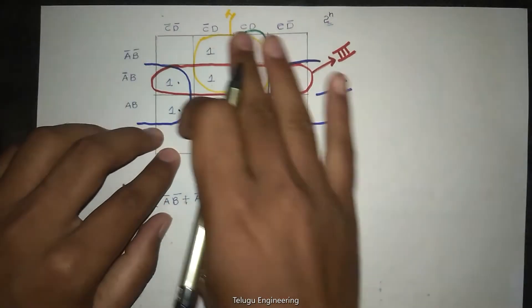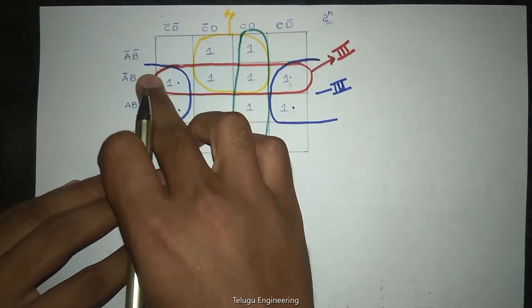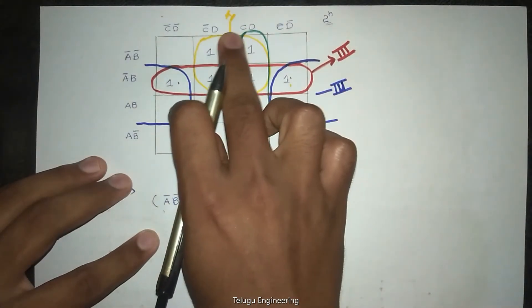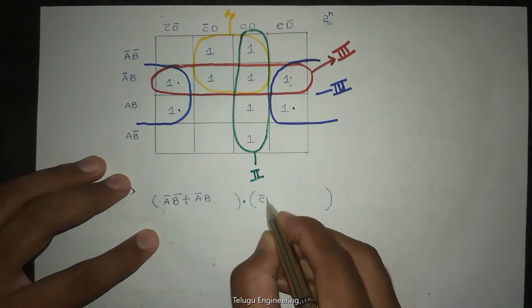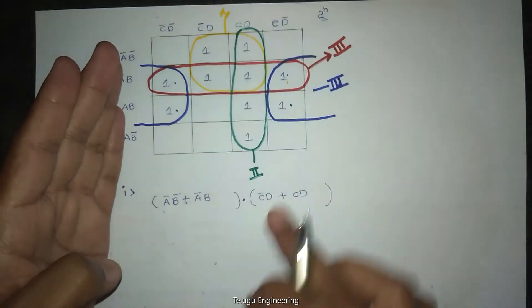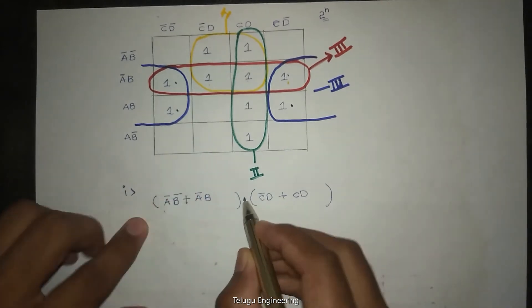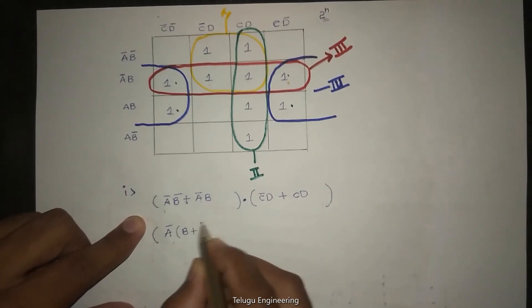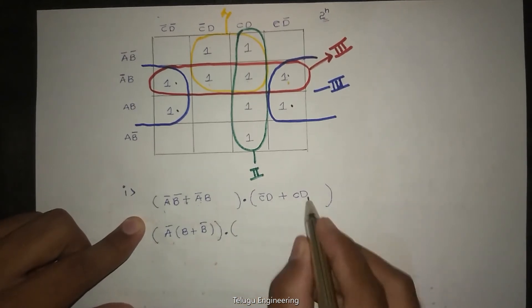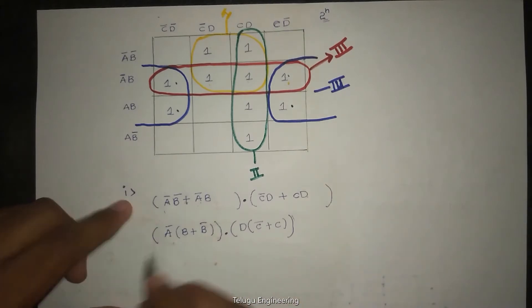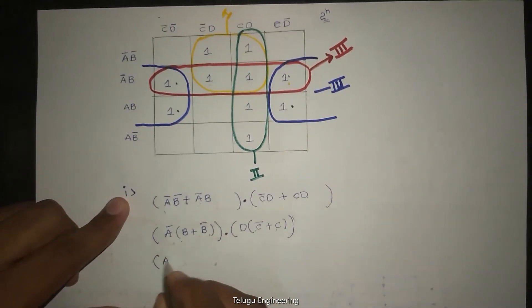It is A bar B. The rows involved are A bar, so the row values, then dot product with the other side columns involved in this group: C bar D and CD. So just write A bar B plus A bar times C bar D plus CD. Each side is involved in this group. So it is A bar times B plus B bar, dot product with D times C bar plus C. And we know from Boolean algebra, A plus A bar equals one. So B plus B bar is one, C plus C bar is one. Finally we get A bar dot D. So that equals A bar dot D.